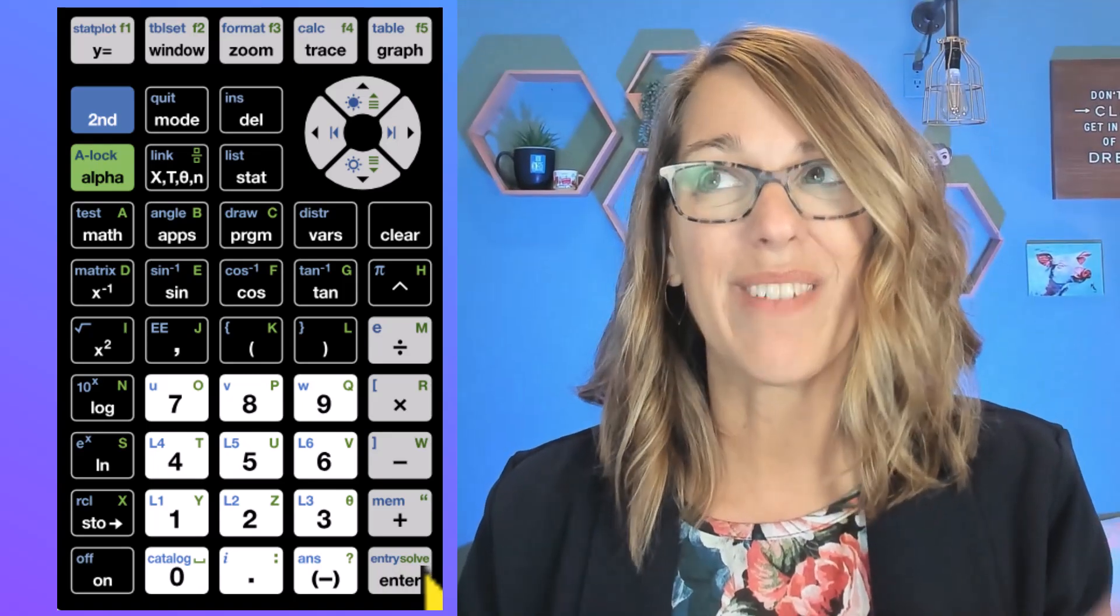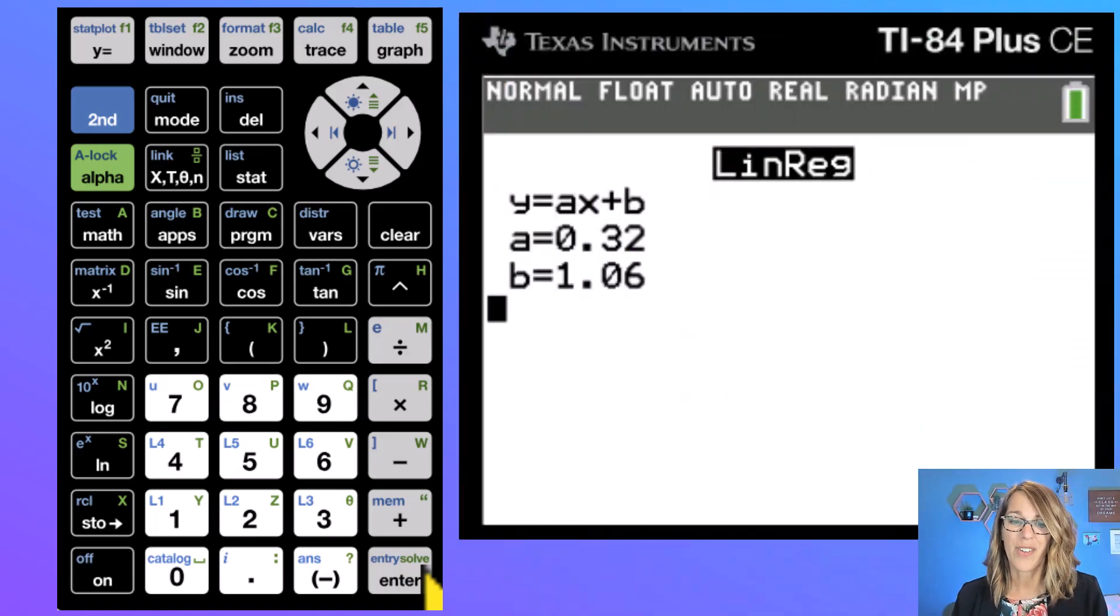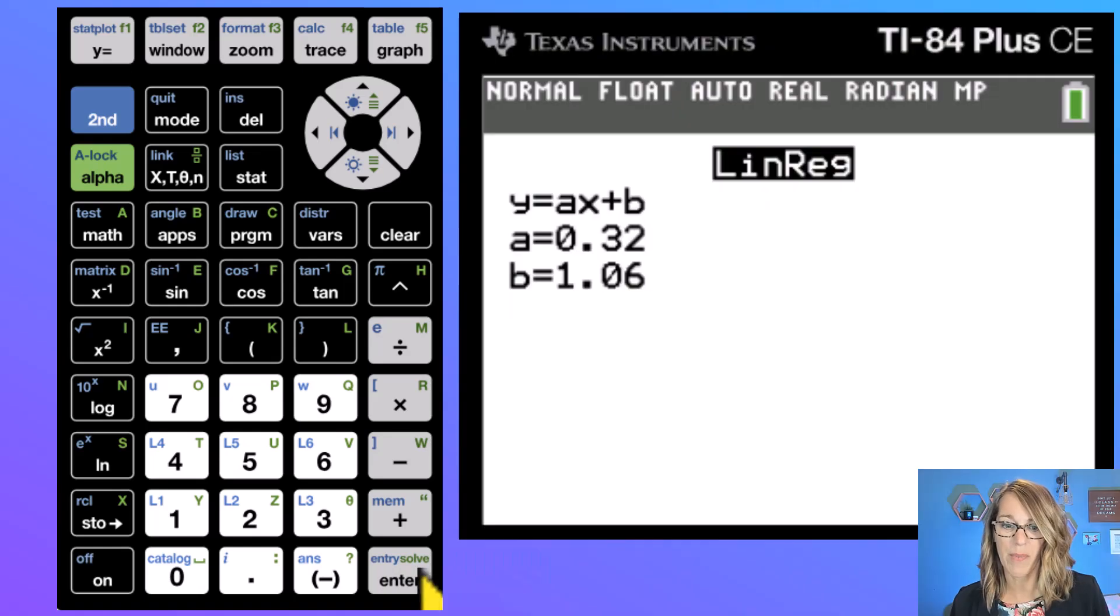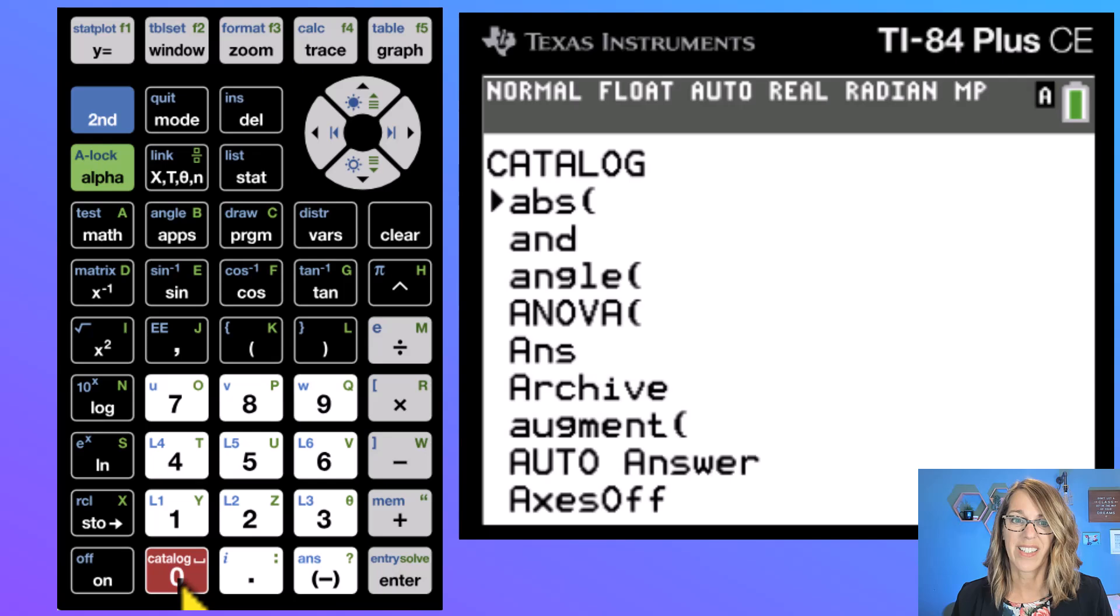To do that I need to make sure that the diagnostic on is set on my calculator and unfortunately it's not the default. So we're going to go to the catalog and once you do this it's set. I'm going to go to my catalog which is right above that zero key. So second and then catalog. I'm looking for diagnostic on which I know starts with the letter d, so I'm going to type in the letter d to get to the d's. So hit alpha followed by d which is that x to the negative one key.